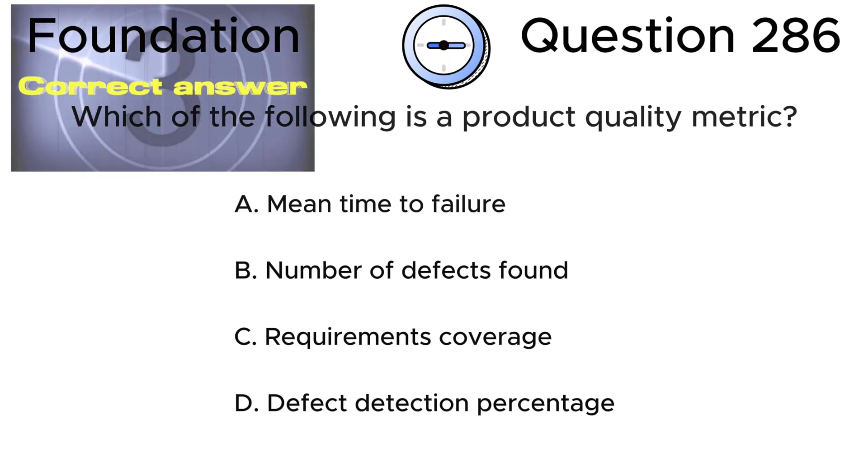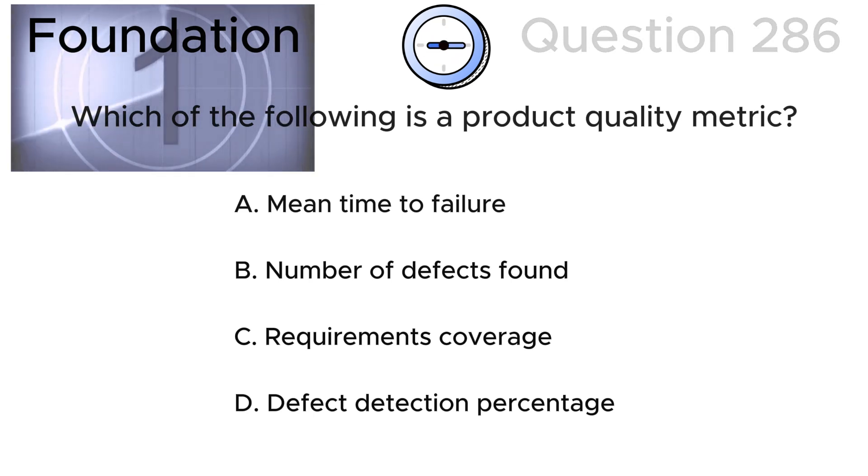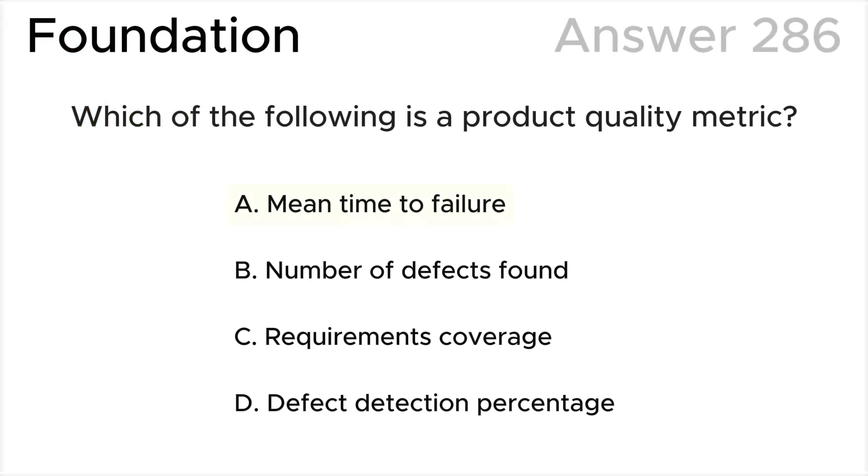The correct answer is A. According to the ISTQB syllabus, product quality metrics measure quality characteristics. Mean time to failure measures maturity, so it is a product quality metric. All the rest of the answers are wrong.